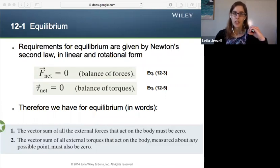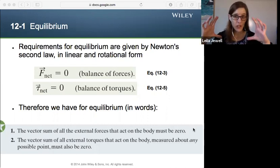So our requirements for equilibrium, our big key equations of this chapter are given by Newton's second law in linear and rotational form. In other words, that F_net has to equal zero, because there's no acceleration, and net torque has to equal zero. There's no angular acceleration. This is known as the balance of forces and the balance of torques that they need to balance out. So therefore we have for equilibrium, in terms of words, the vector sum of all the external forces that act on a body must be zero. The vector sum of all external torques that act on the body, measured about any possible point, must also be zero. And that part is a key detail because we'll see that we will often shift the point that we choose to measure the torques around to help ourselves out, make our lives easier.